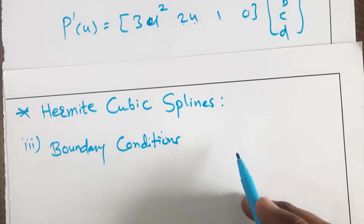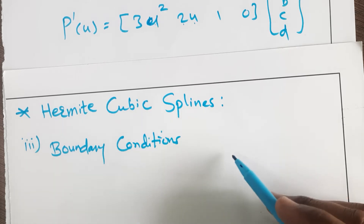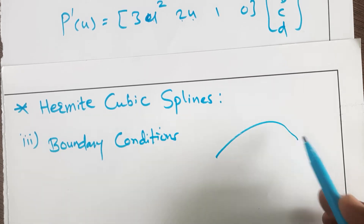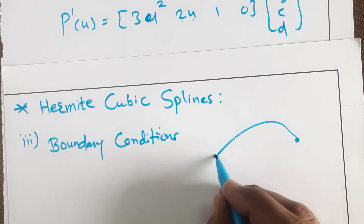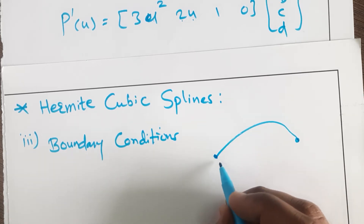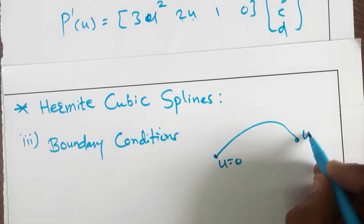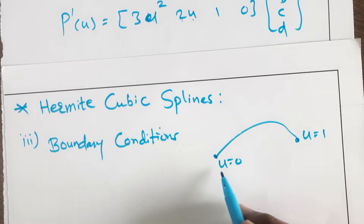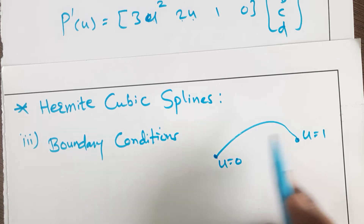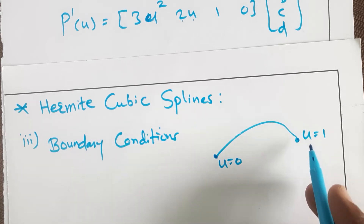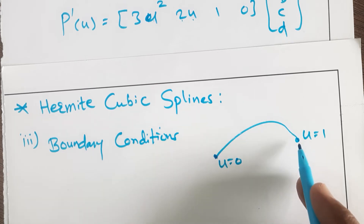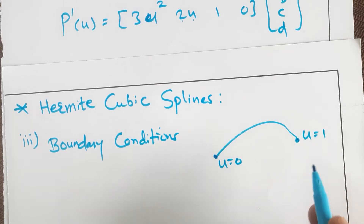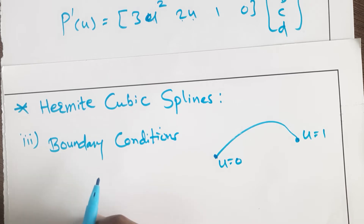Boundary conditions are nothing but the end conditions of the spline. For example, if this is a spline, this is the first point and this is the second point. We need to find the boundary conditions here. Here u will be 0 and here u will be 1, where u is a parameter. So u will vary from minimum to maximum value. When u is 0, what will be the boundary condition? When u is maximum, what will be the boundary condition? In this session we will see the boundary conditions of the Hermite cubic spline.